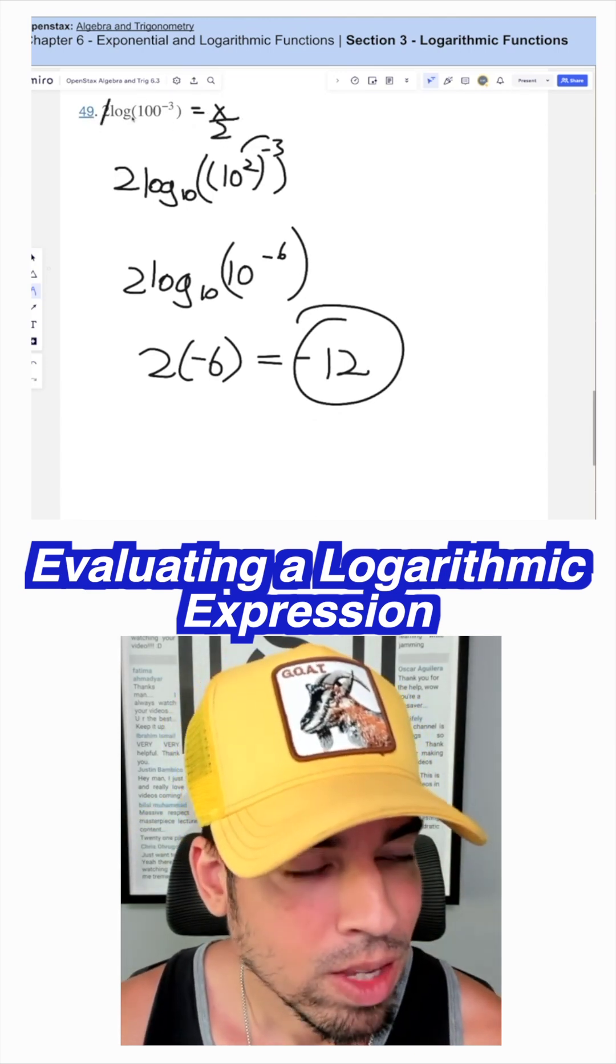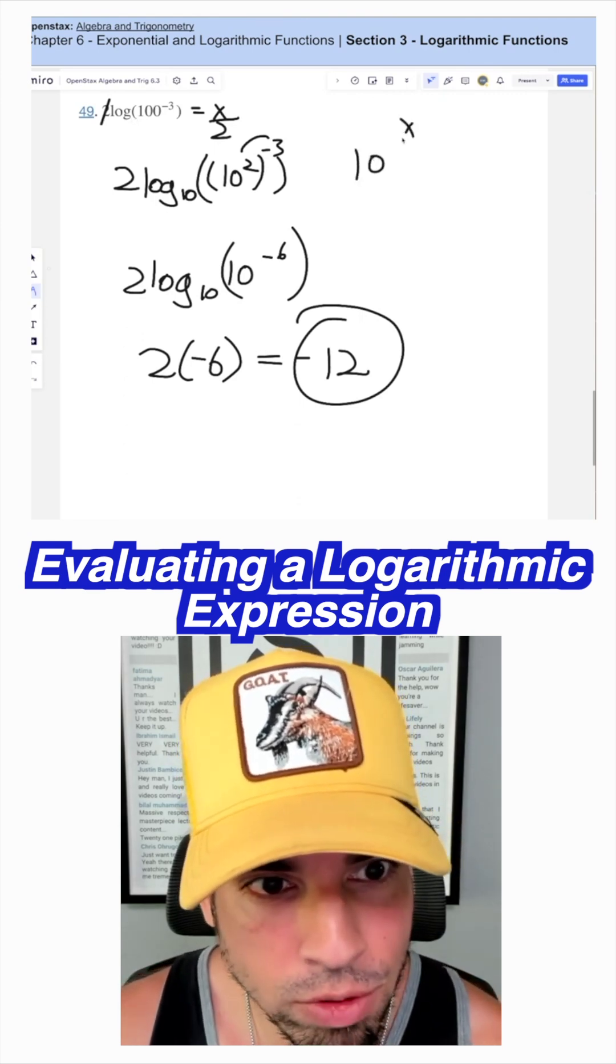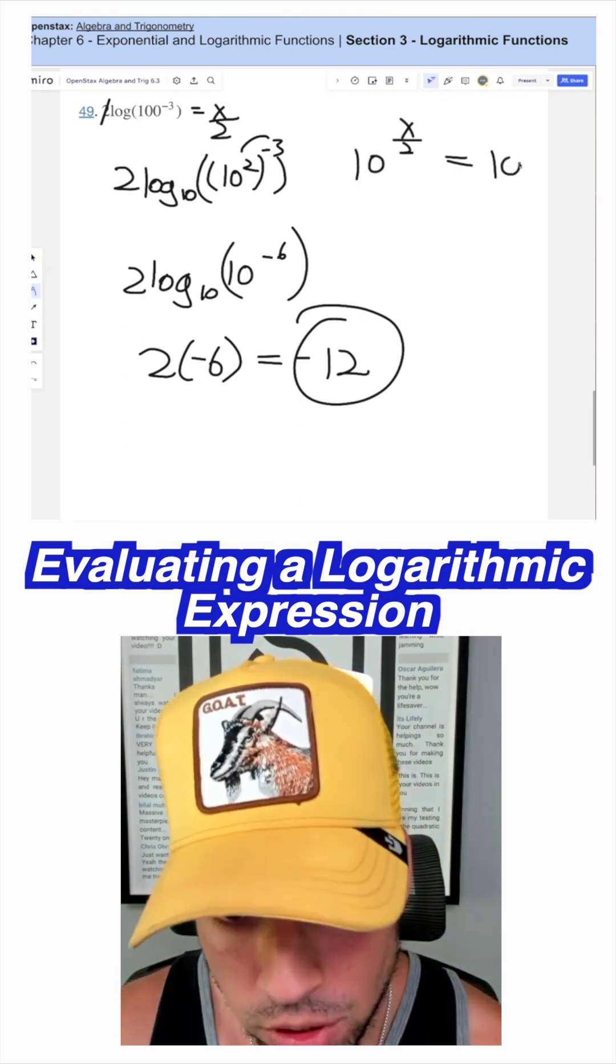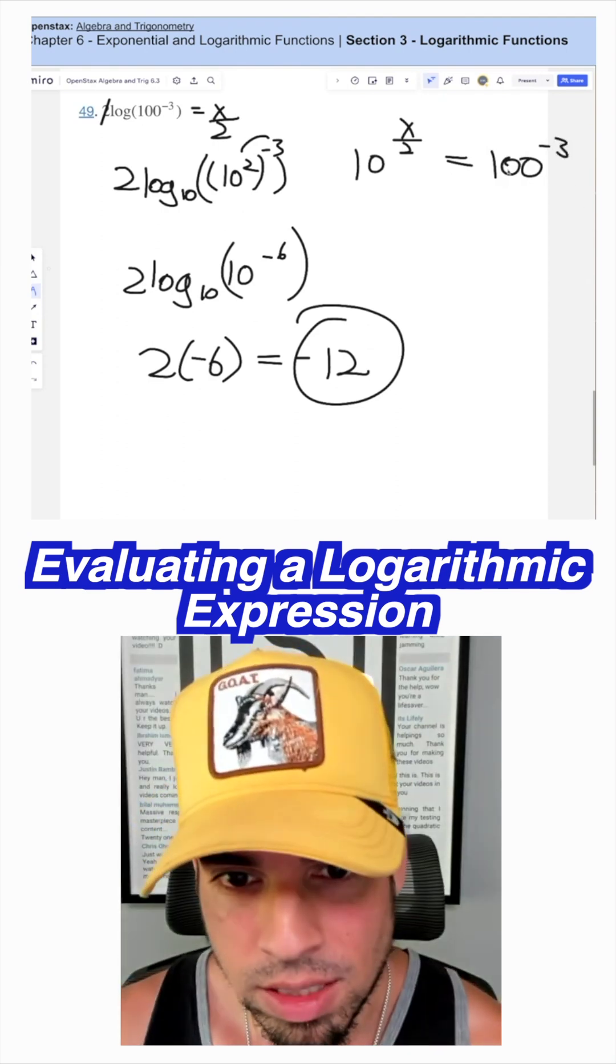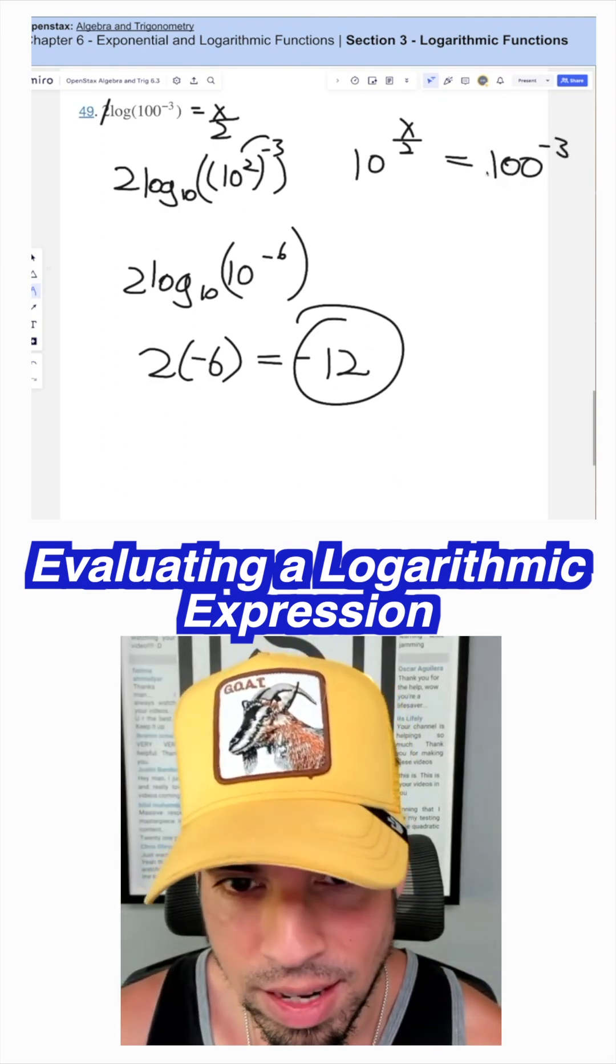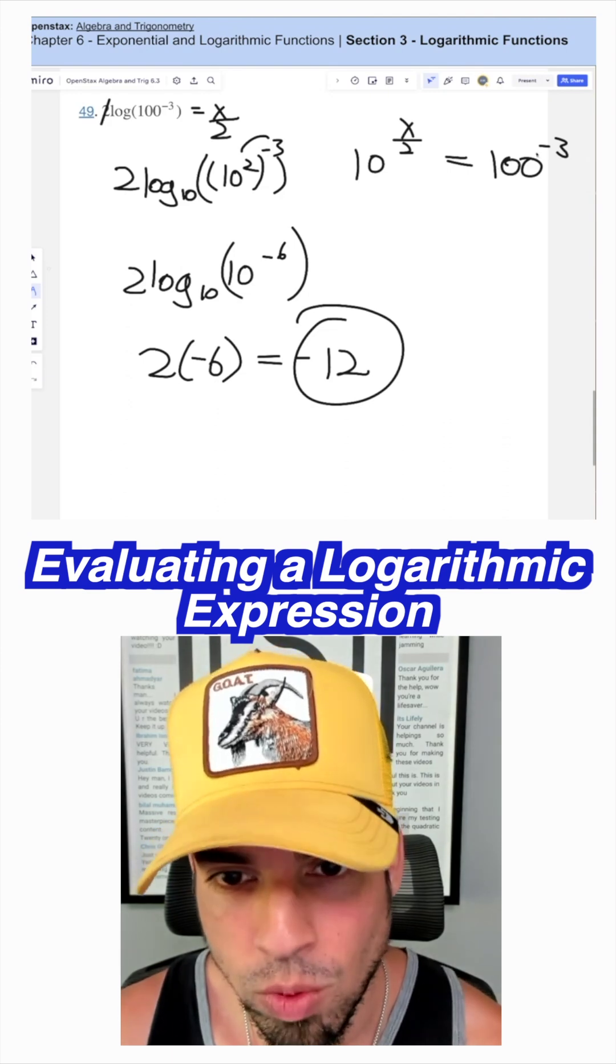This would say to convert it to exponential: 10 to the x over two equals 100 to the negative third. And then we'd go down that same path. 100 is really 10 squared. So this is 10 squared to the negative third,